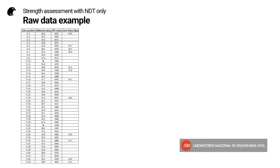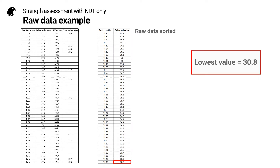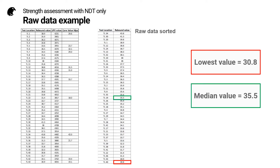Now let's apply this procedure to our raw data example. The first step is to sort the rebound data from highest to lowest. I can then easily see the lowest value, which is 30.8, and the median value — the value bang in the middle — which is 35.5.